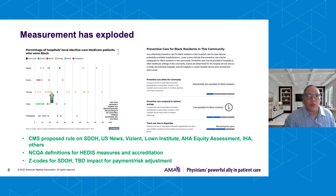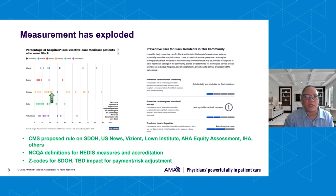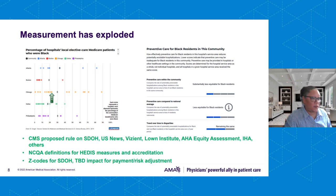At Rush, we recognize that we need to measure the types of disparities and factors that impact people's health. We look at national measures such as the CMS proposed rule on social determinants, measures from U.S. News, Vizient, and others, as well as NCQA definitions of HEDIS measures and accreditation. We're also looking at Z codes that capture social determinants of health and their impact on payment and risk adjustment. Data is a critical component of helping us determine, address, and mitigate social determinants of health.